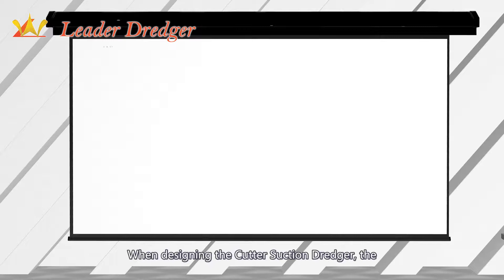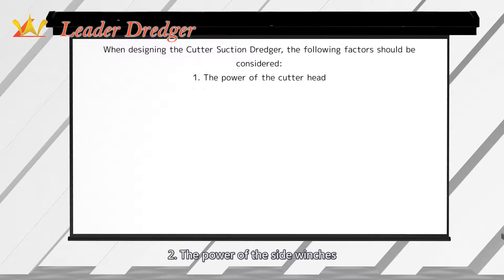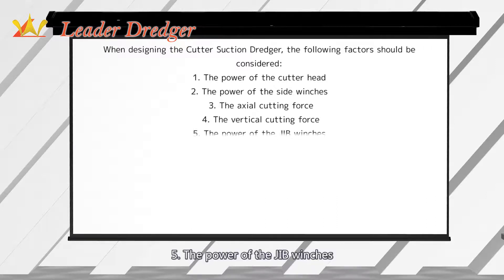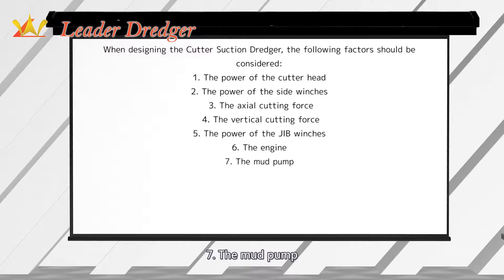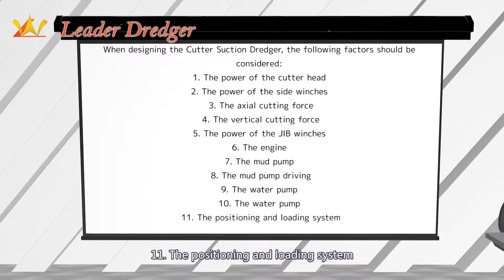When designing the cutter suction dredger, the following factors should be considered: 1. The power of the cutter head; 2. The power of the side winches; 3. The axial cutting force; 4. The vertical cutting force; 5. The power of the jib winches; 6. The engine; 7. The mud pump; 8. The mud pump driving; 9. The water pump; 10. The water pump; 11. The positioning and loading system.